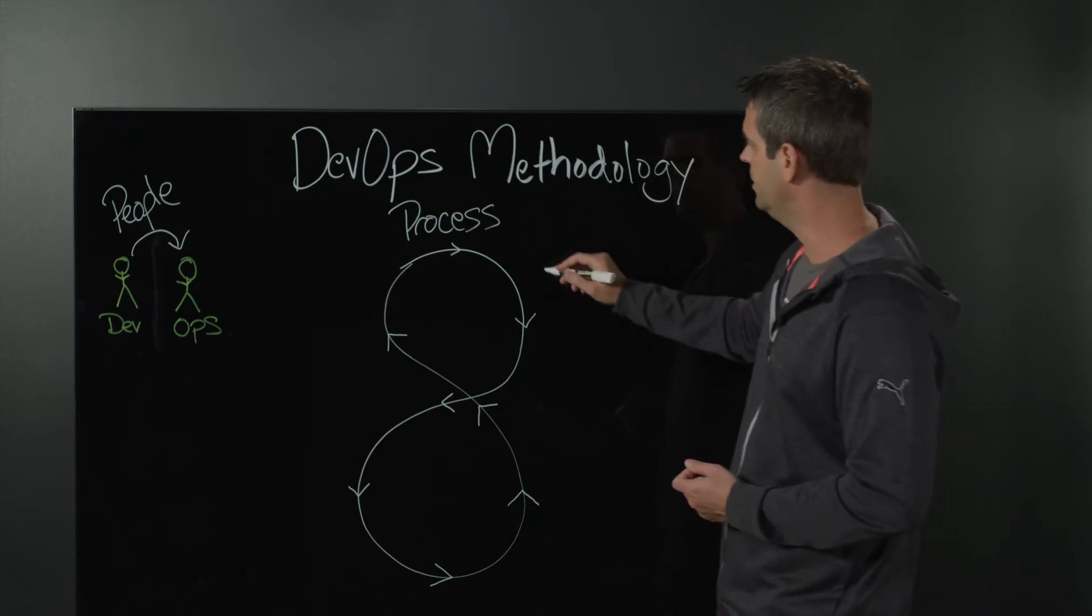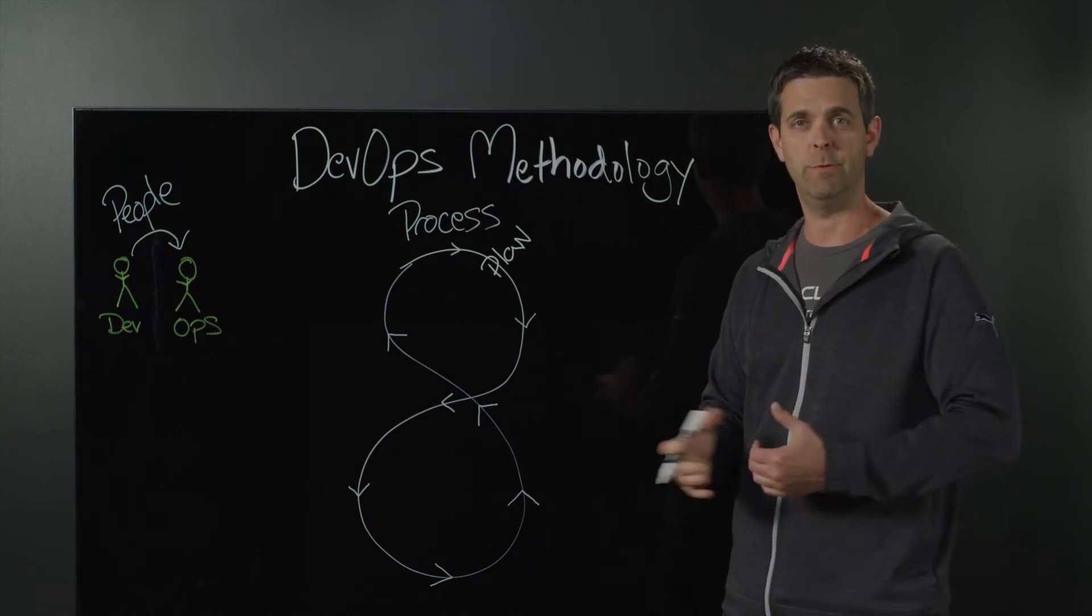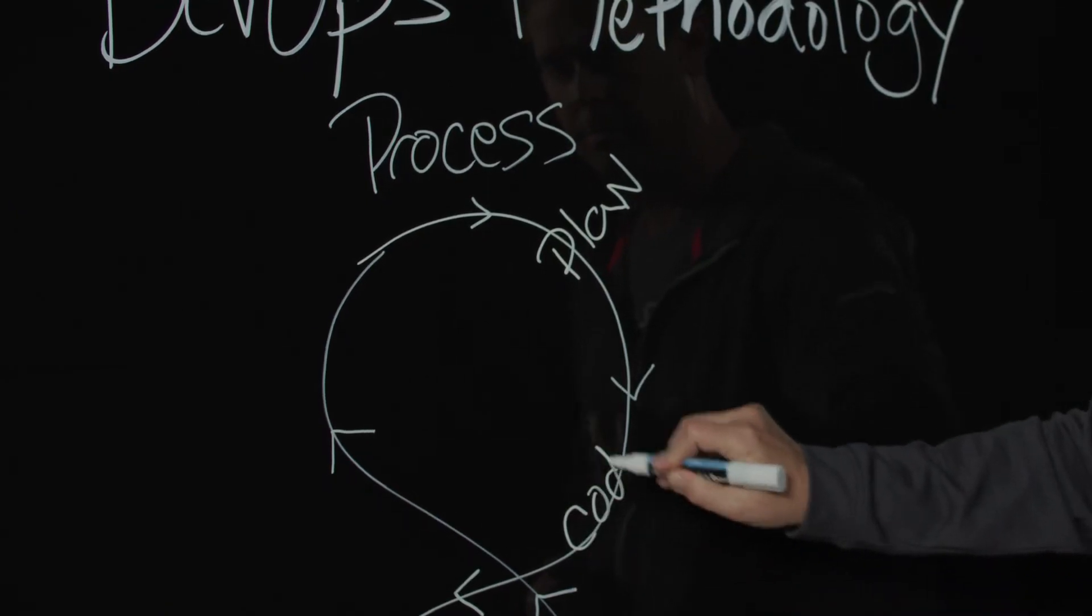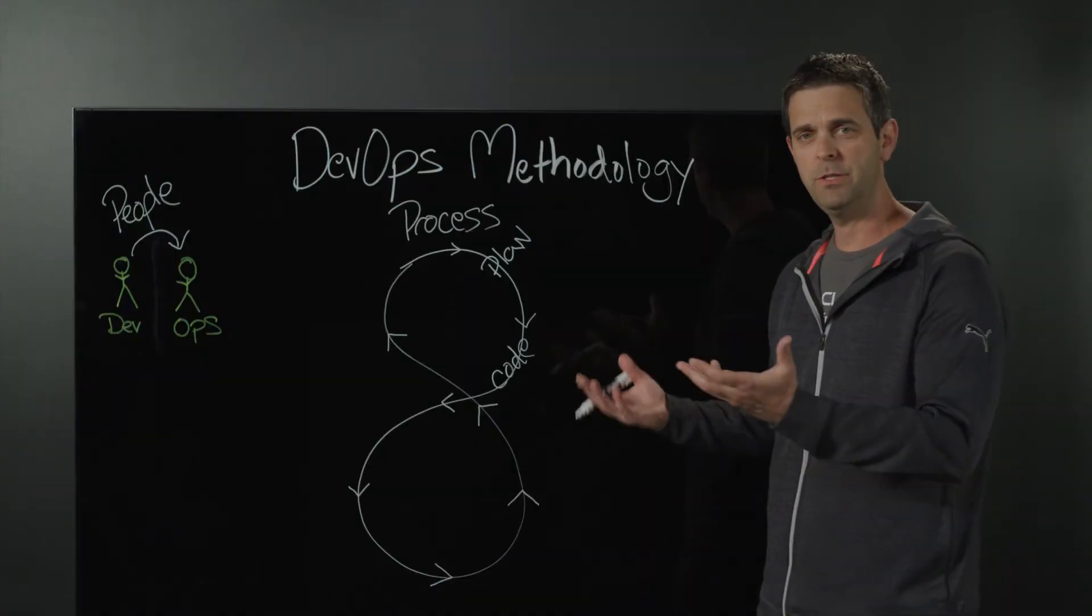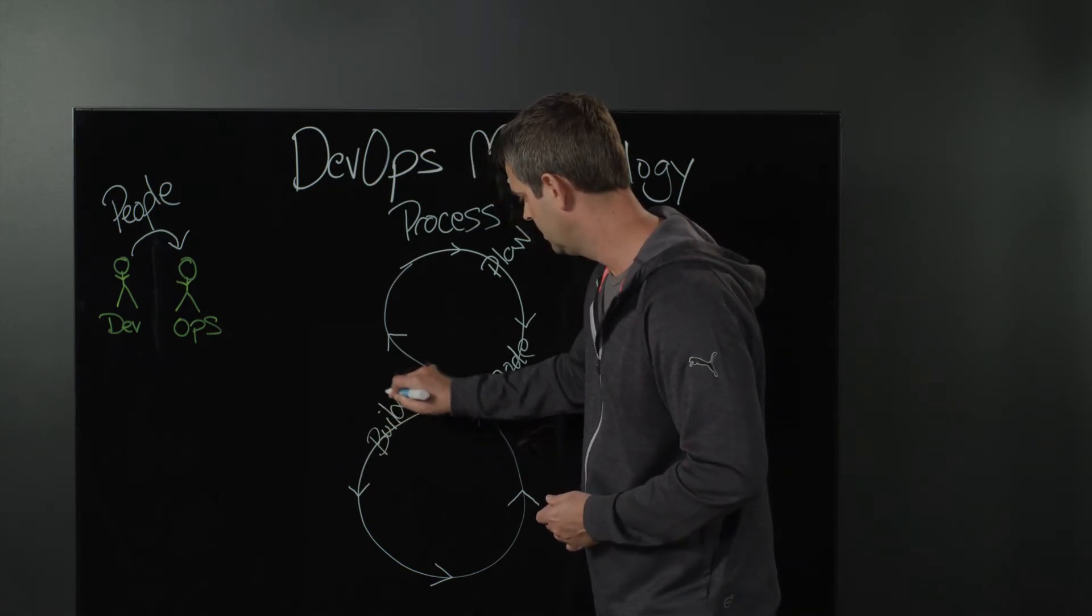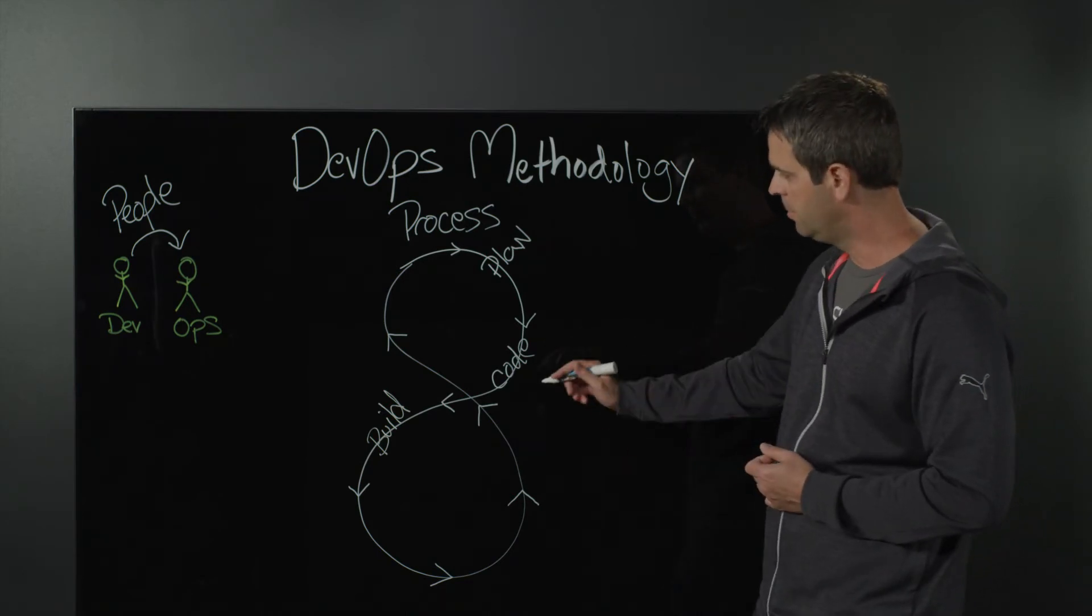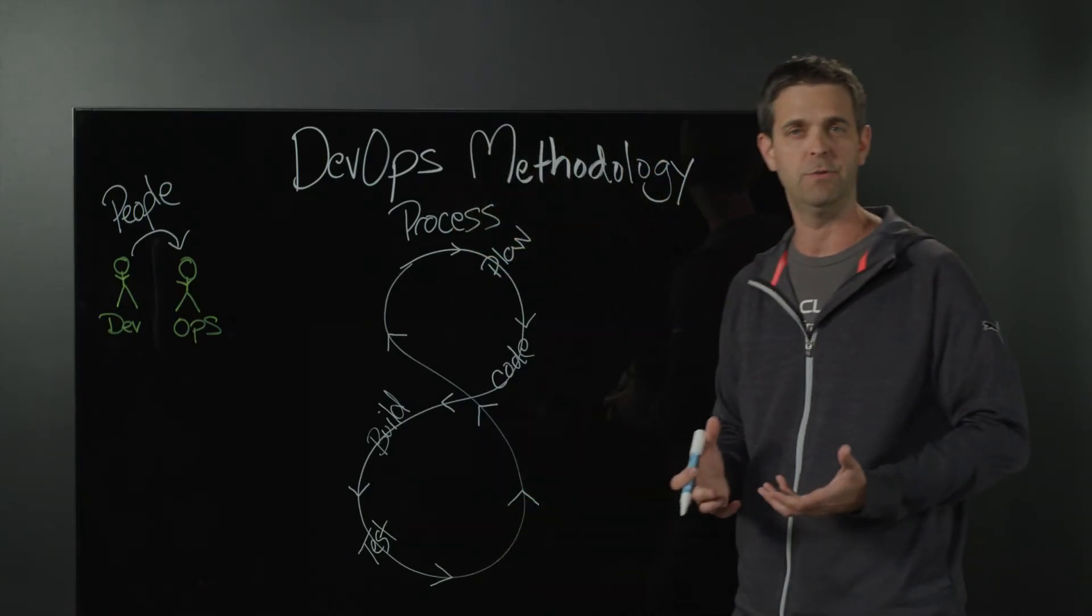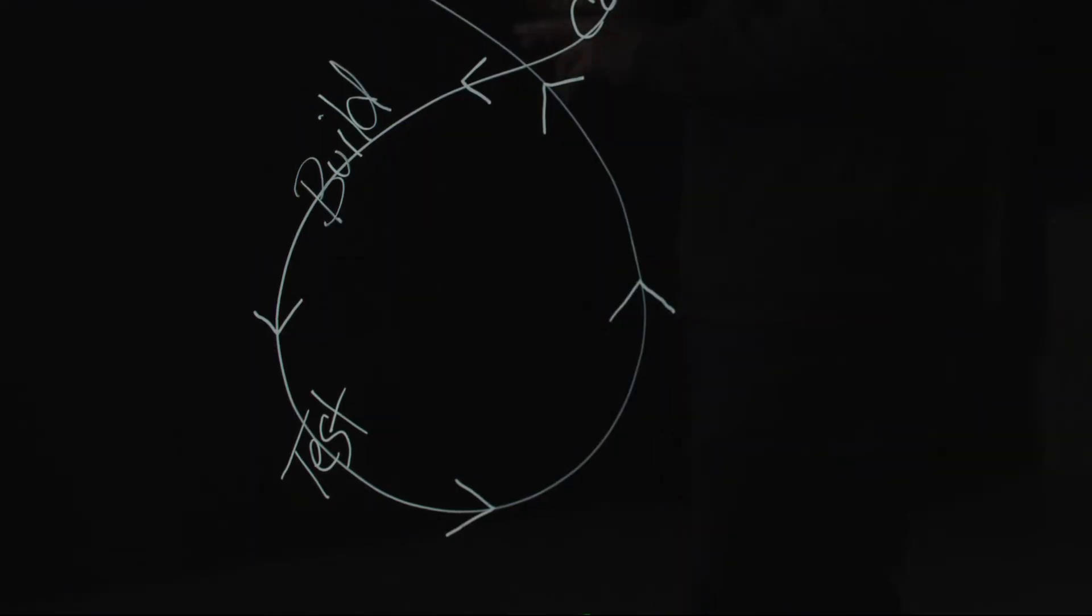We're going to start here with the process. The first thing we do is we plan. What is it that we want to do and that we want to deliver? We're going to take that plan and move it into the code phase. We're going to write some code and do some basic testing. After we've written some code, we'll do the standard build process, compiling or generating some sort of deliverable artifact as part of that. We'll move from build to the next test phase, or the more official test phase where we potentially run load testing, regression testing, additional user acceptance testing, and so on.